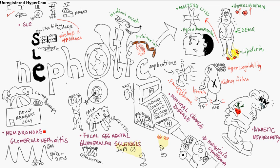Under light microscopy, you see diffuse capillary wall thickening and basement membrane thickening, but not inflammation. Immunofluorescence shows a granular pattern of IgG and C3 — the lumpy-bumpy pattern. On electron microscopy, you see electron-dense immune complex deposition in sub-epithelial locations. Silver methenamine stain shows a spike and dome appearance resulting from extension of the basement membrane between and around immune deposits — spikes are the basement membrane, domes are the immune complex deposits.